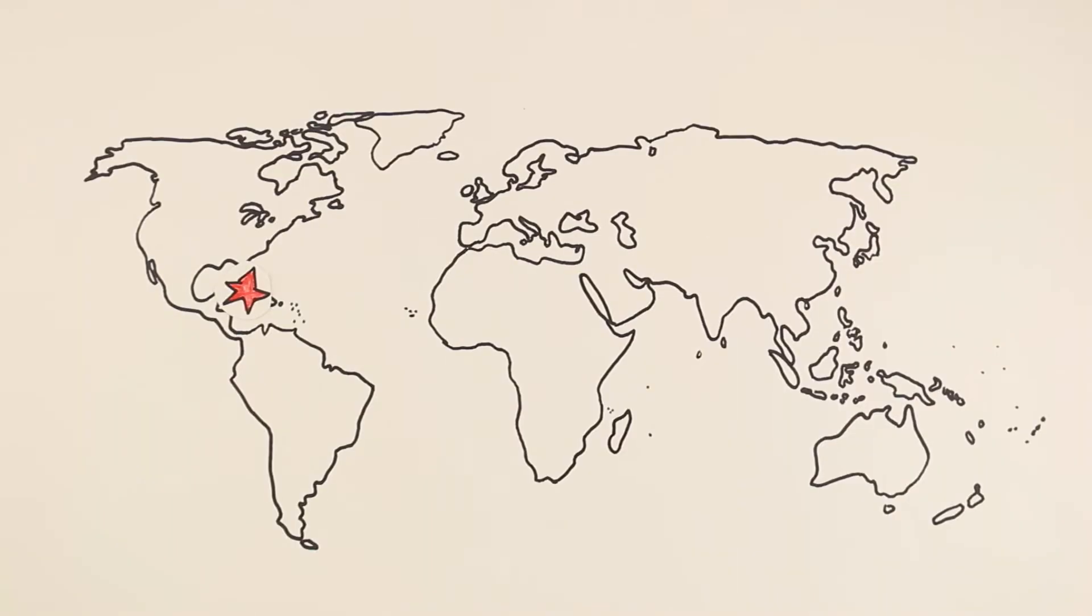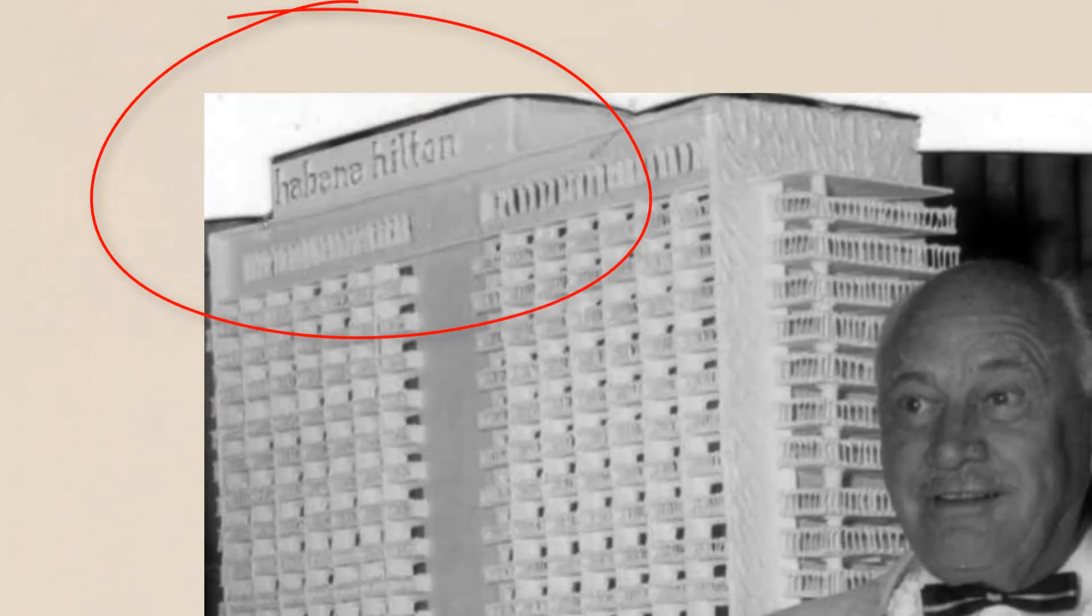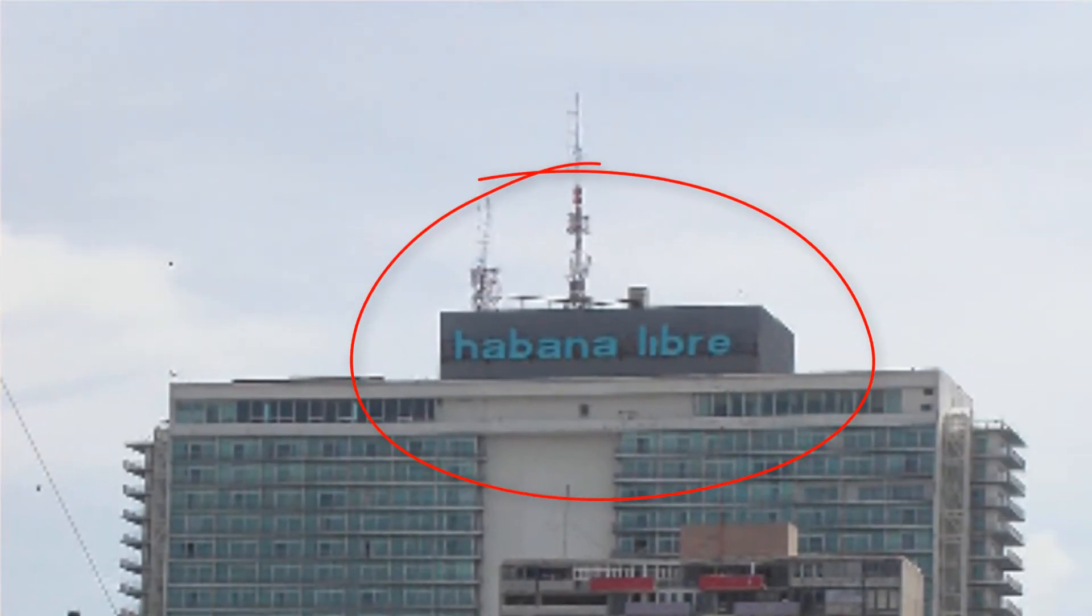Cuba is a current example of a communist country. In 1959, Fidel Castro took over the Cuban government and implemented a command economy. He nationalized all foreign businesses and banks, as well as most of the nation's resources.